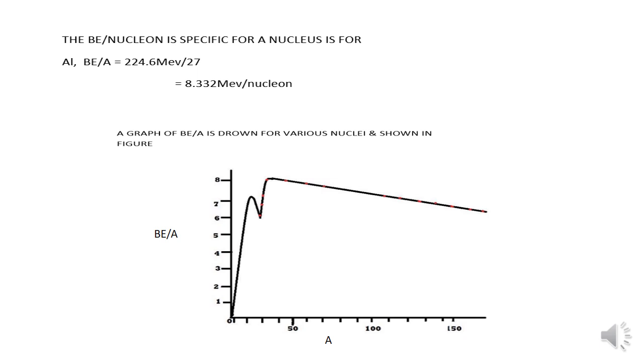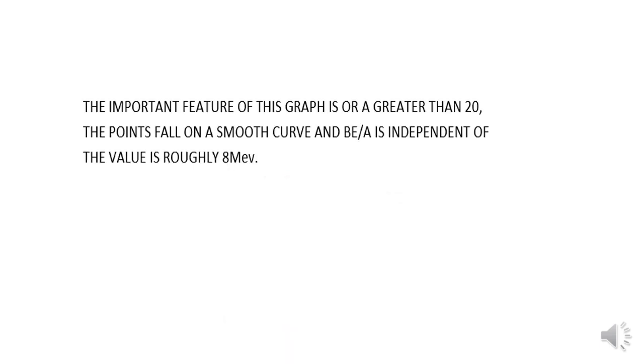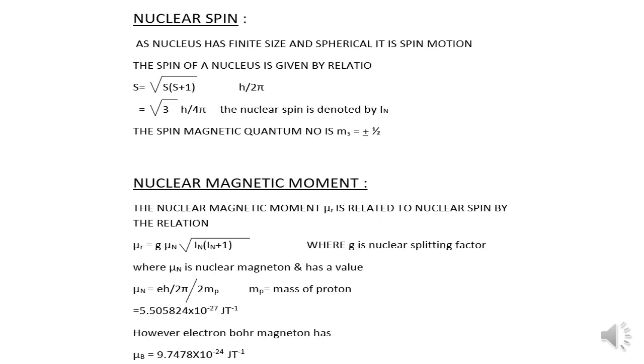Which comes out to be 8.332 MeV per nucleon. A graph of binding energy per mass number is drawn for various nuclei. The important feature of this graph is for a mass number greater than 20, the points fall on a smooth curve and binding energy per mass number is independent of the value of A and it is roughly remaining constant at 8 MeV.